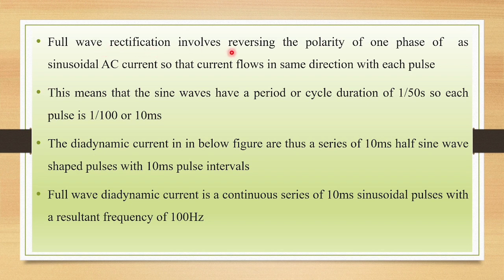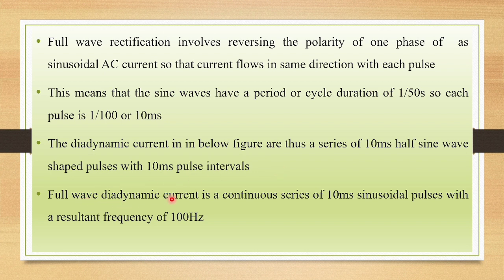Full wave rectification involves reversing the polarity of one phase of sinusoidal AC current so that the current flows in the same direction with each pulse. The sine waves have a cycle duration of 1 by 50 seconds, so each pulse is 1 by 100 or 10 milliseconds. The diadynamic current is a series of 10 milliseconds half sine wave shaped pulses with 10 milliseconds pulse intervals. The full wave diadynamic current is a continuous series of 10 millisecond sinusoidal pulses with a resultant frequency of 100 Hz.